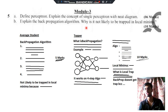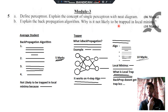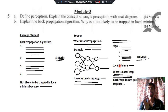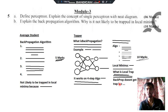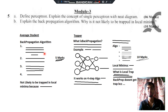Then move to the next part of the question: why is it not likely to be trapped in local minima? First write what local minima is, then write what a local trap is and why the trap happens, then write why backpropagation does not fall into that trap. Doing this will get you maximum marks — that's what you need to keep in mind, and this is what makes all the difference.